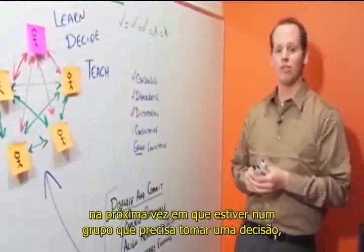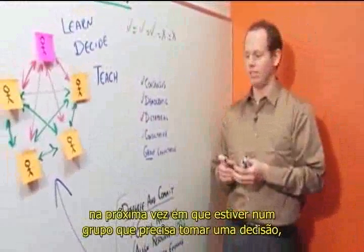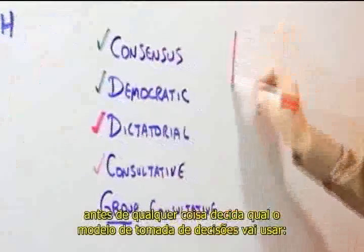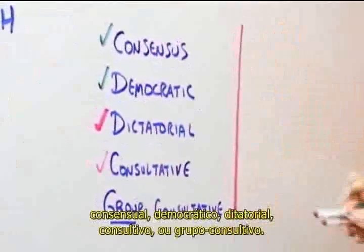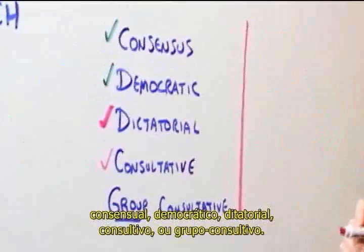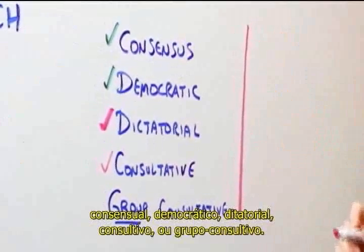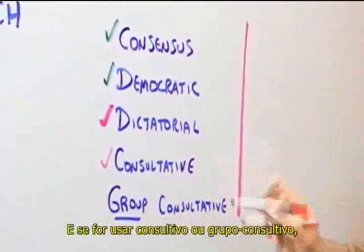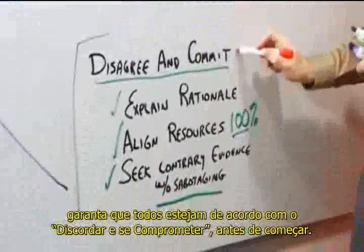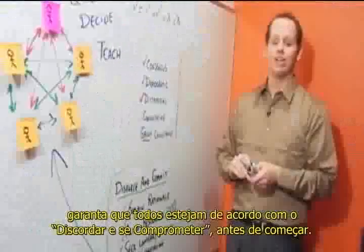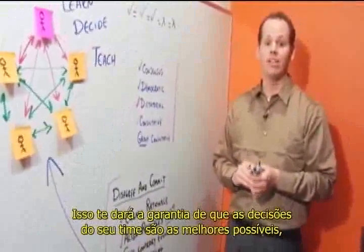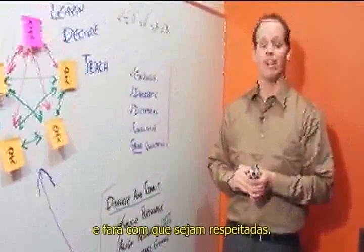So the next time you have a group of people that need to make a decision, before you do anything, decide what model of decision-making you're going to use: consensus, democratic, dictatorial, consultative, or group consultative. And if you're going to do consultative or group consultative decision-making, be sure you have a disagree and commit contract before you start. It'll make sure your team decisions are the best decisions they can be, and it'll make sure they stick.